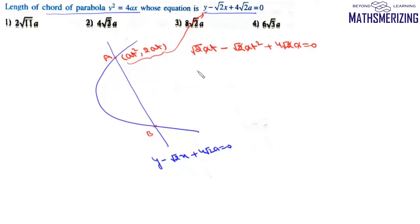This gives us √2t - t² + 4 = 0, or rearranging: t² - √2t - 4 = 0.